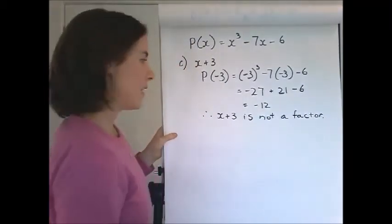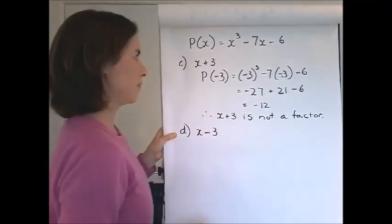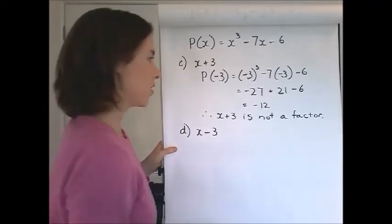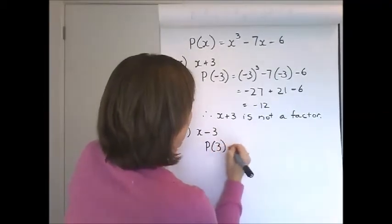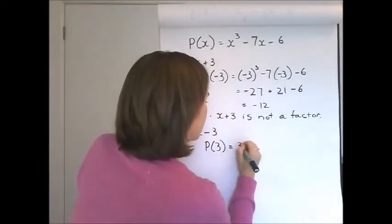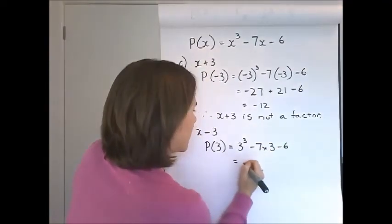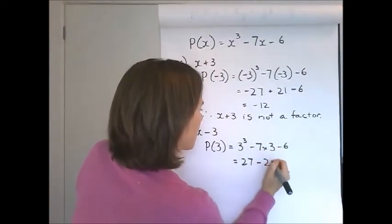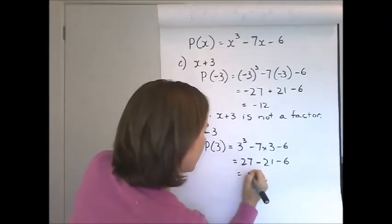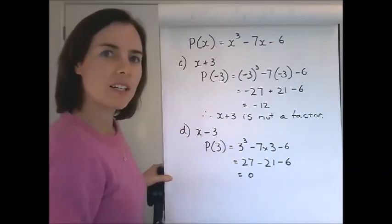And part D asked us to test x minus 3. So to test that, again, all we need to do is substitute, but we substitute positive 3 into the polynomial, which is 27 minus 21 minus 6. And that is 0, which means that x take 3 is a factor.